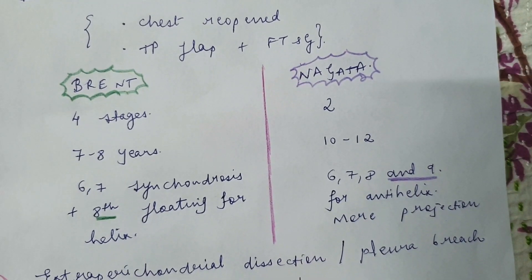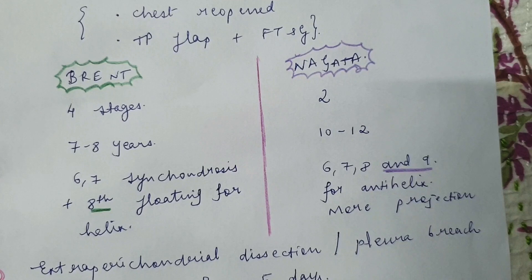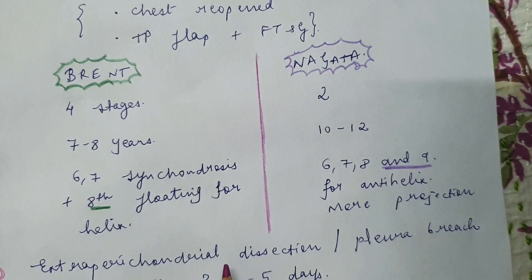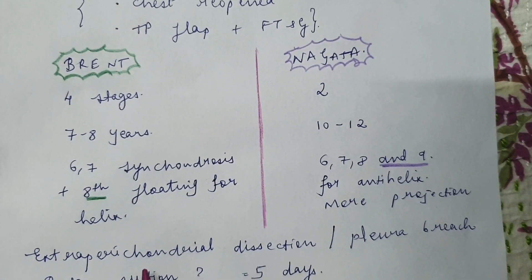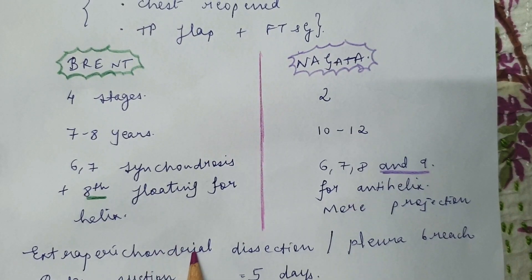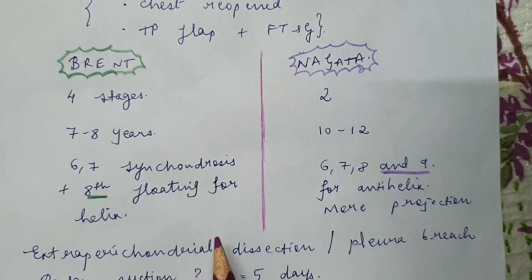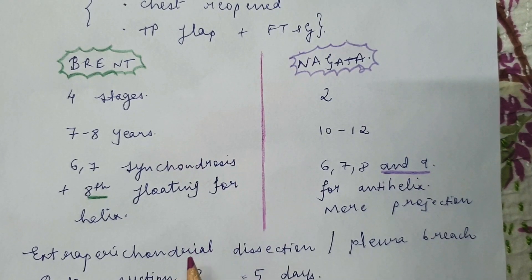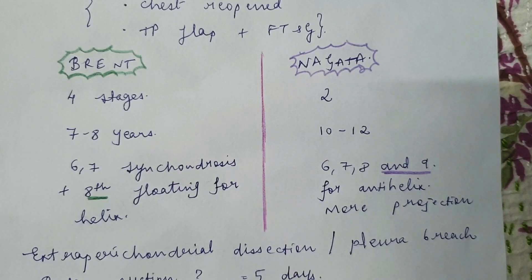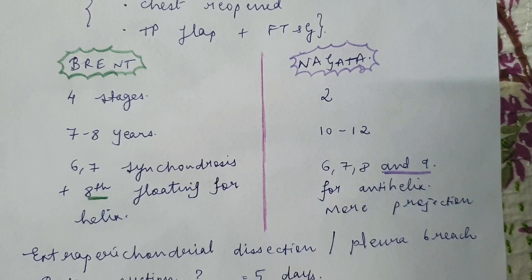For cartilage framework harvest, extraperichondrial dissection — where you leave the perichondrium behind — is the preferred technique. Leaving the perichondrium behind, and sometimes replacing small pieces of extra cartilage, helps decrease donor-site deformity. The subsequent rib also regrows; the same rib has reportedly been harvested three to four times because the perichondrium helps regenerate the rib.